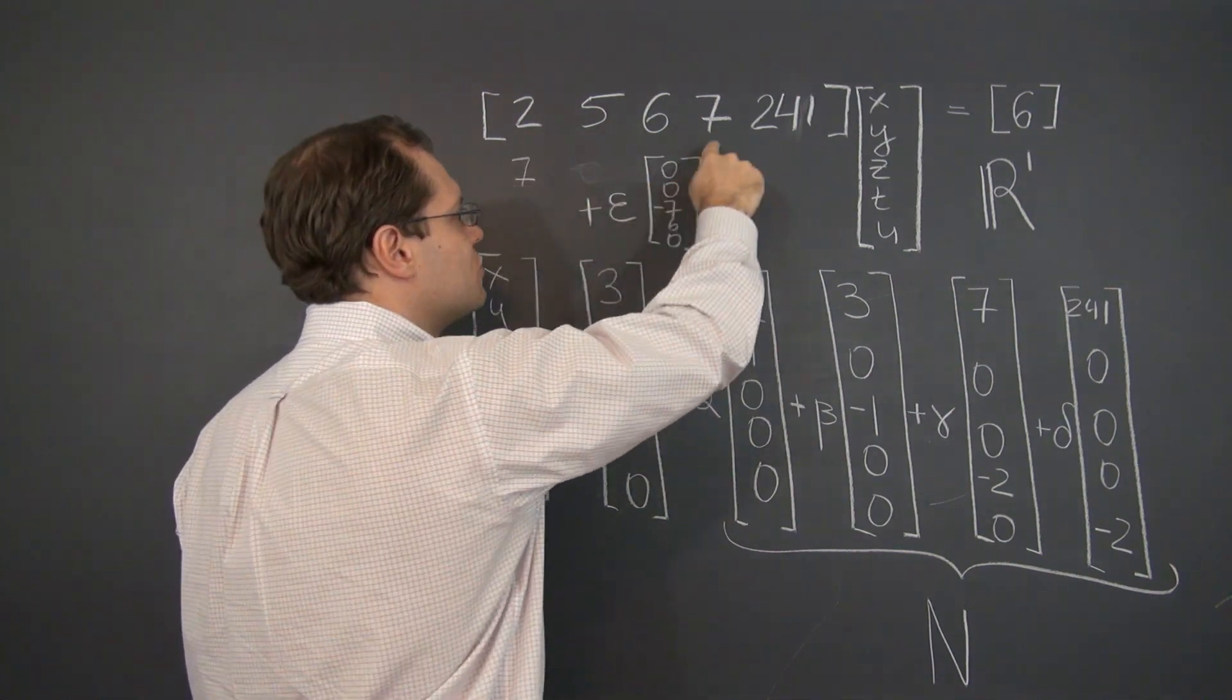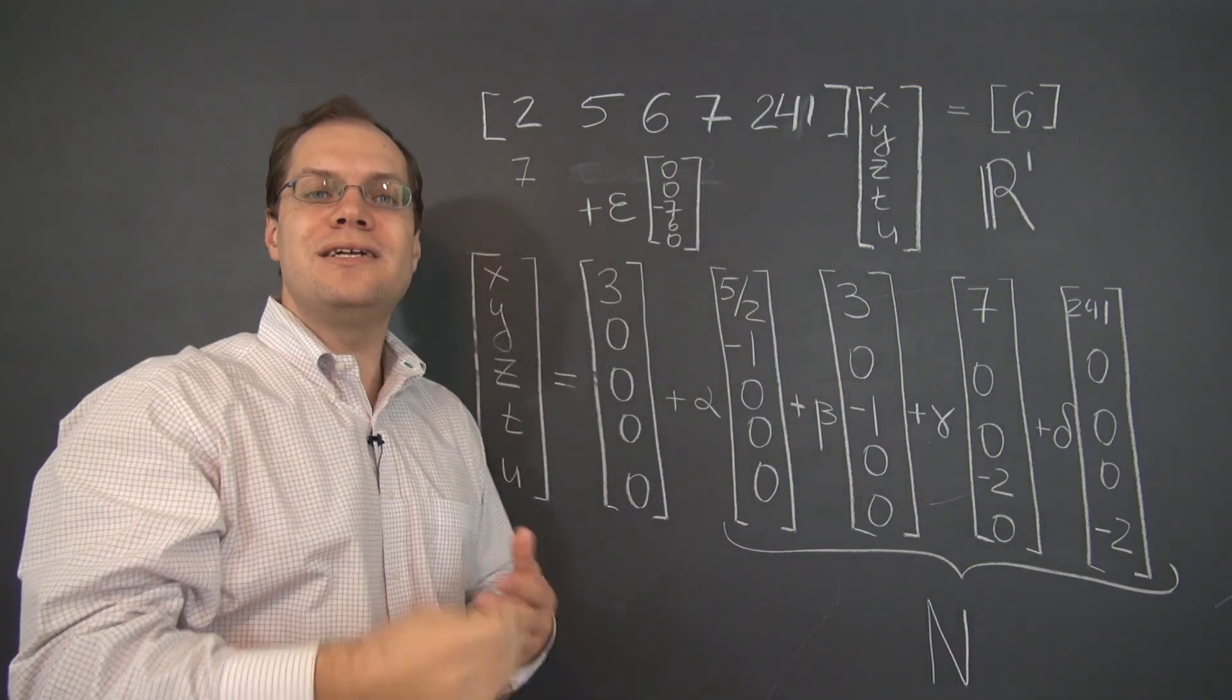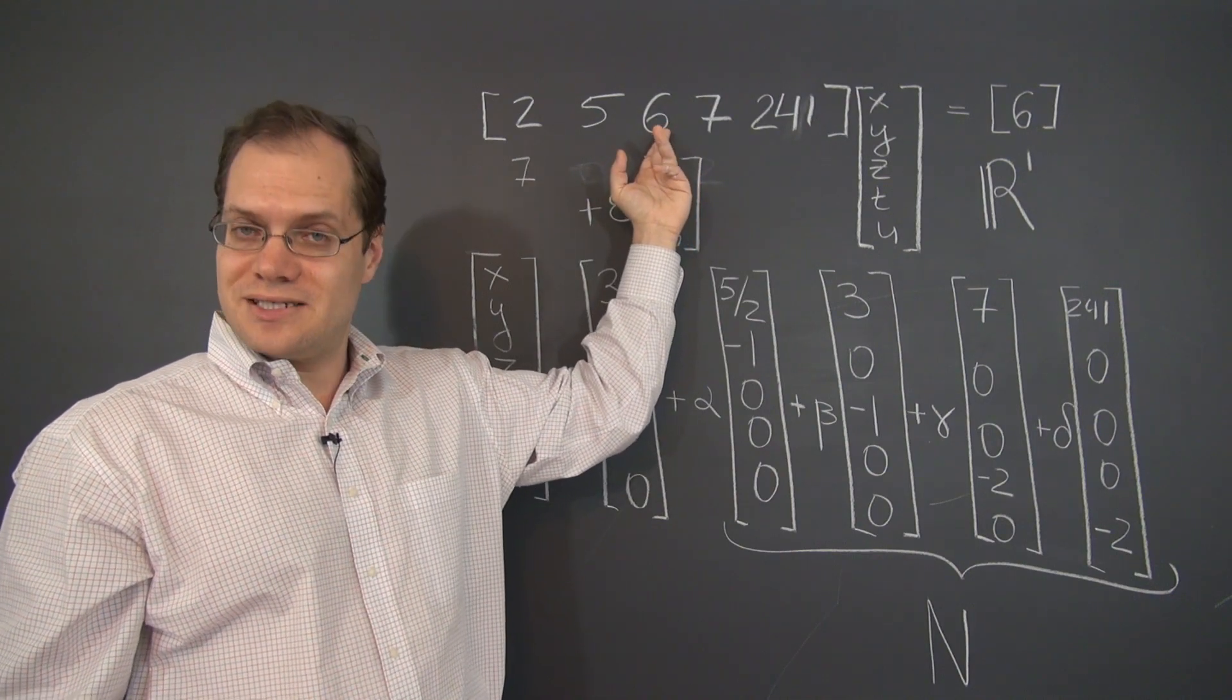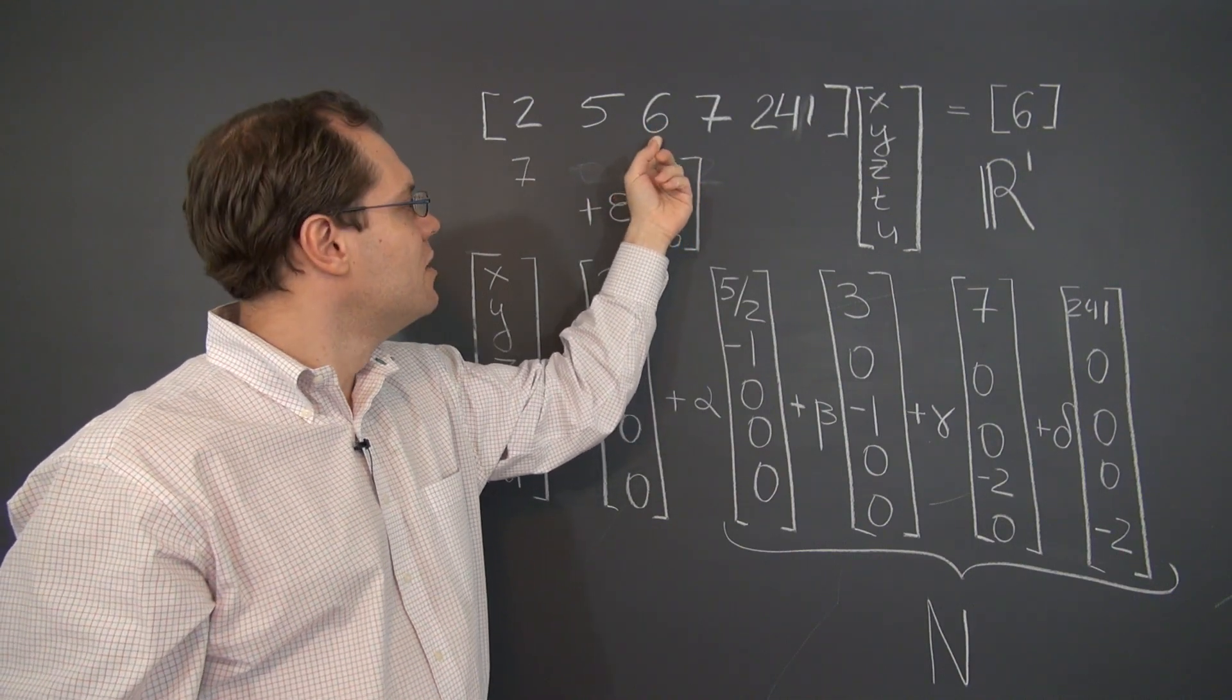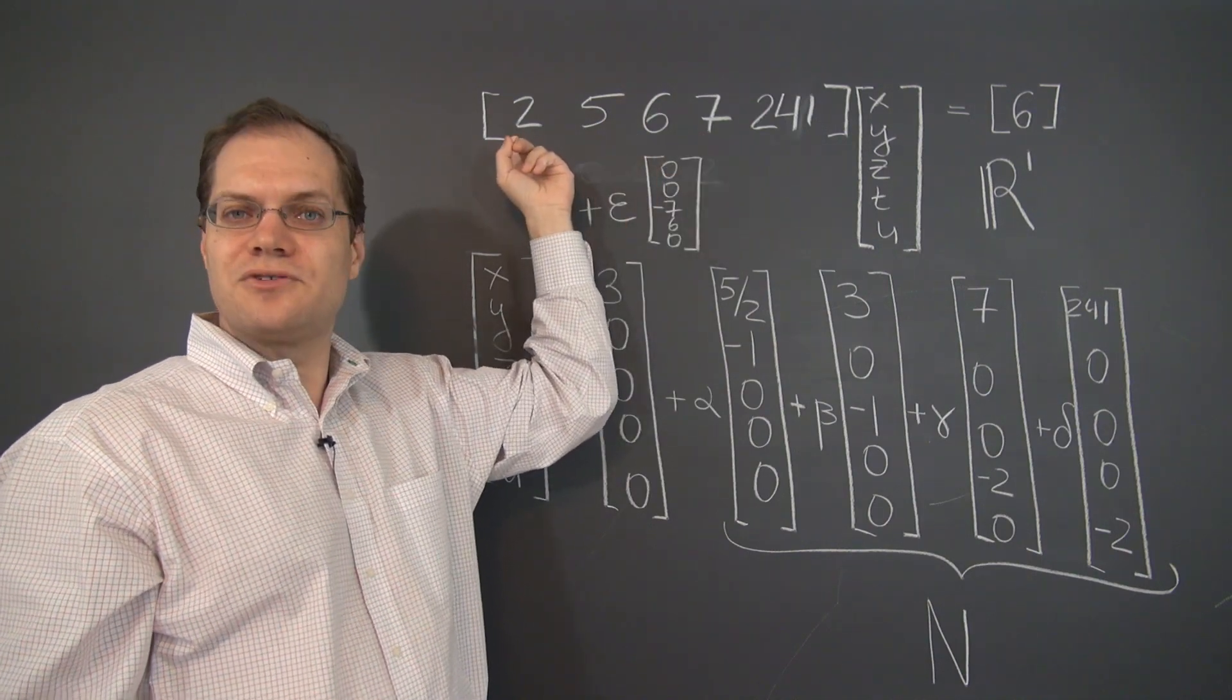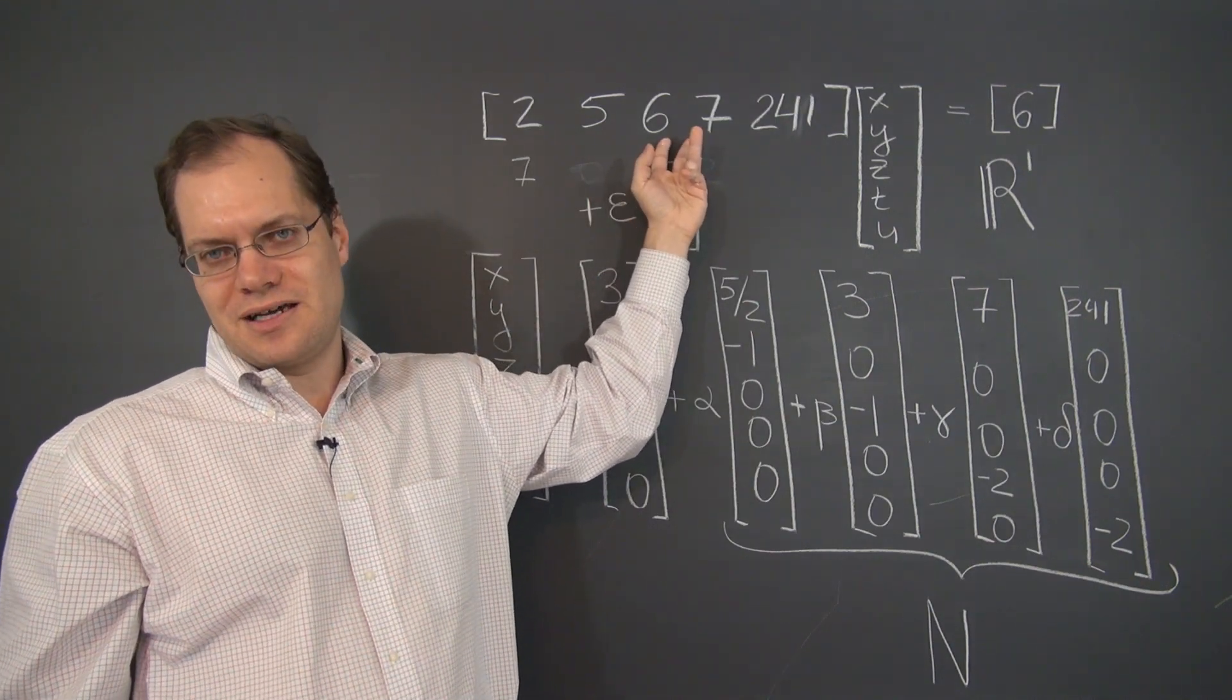and we also know that this column is seven-halves of this column, then that already tells us the relationship between these two columns. Does that make sense? If we know how this column relates to this one and how this column relates to this one, and those relationships are that simple, that already tells us the relationship among these columns.